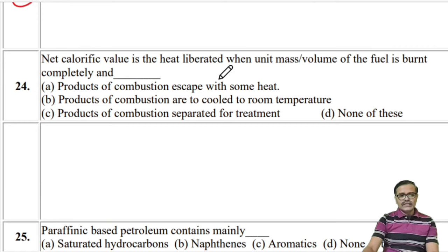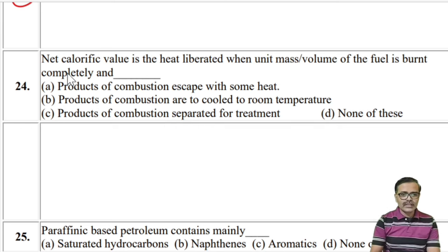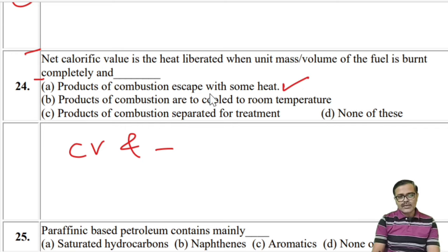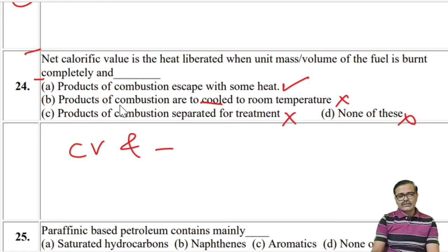Net calorific value is the heat liberated when unit mass or unit volume of fuel is burned completely, and the products of combustion are allowed to escape with some heat. Option B says products are pooled — no. Option C says products are separated — no. So the answer is A: products of combustion escape with some heat.